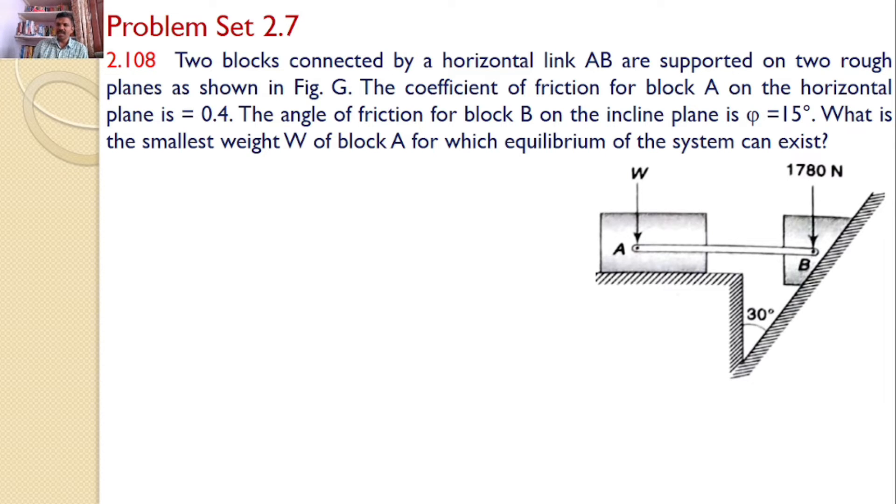First, let us draw the free body diagram for block B. What are the various forces acting on block B? The first force is self-weight. Next, it is resting on an inclined surface, hence there is a reaction force. And since it is a rough inclined surface, there is a frictional force.